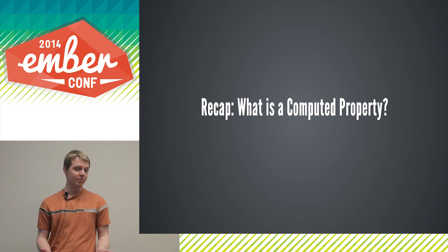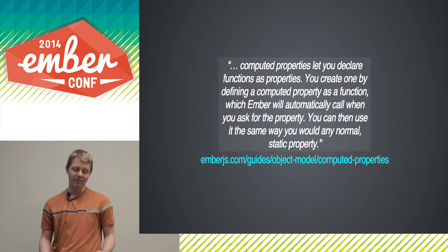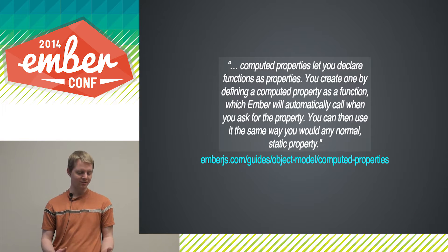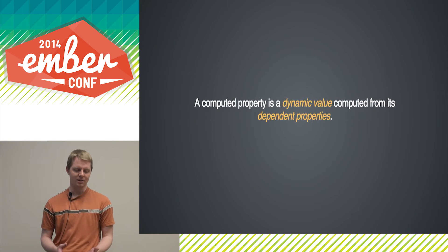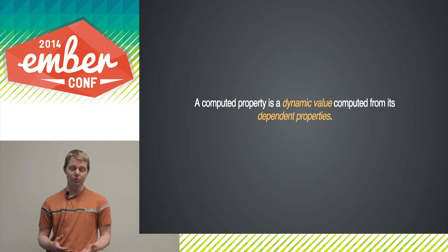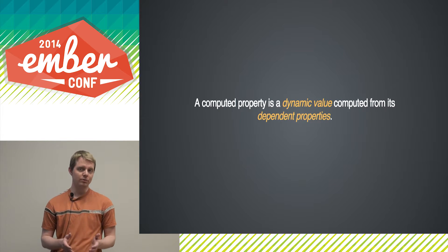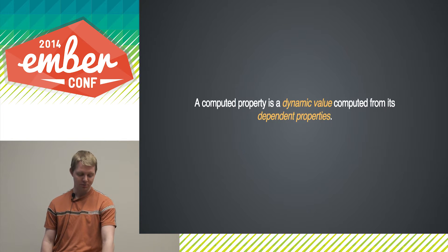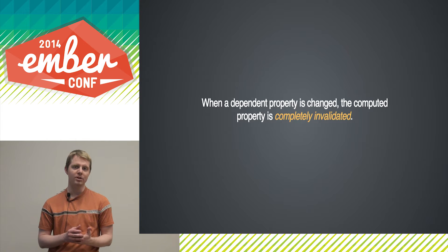Start with a quick recap. What is a computed property? I got this handy definition from the Ember.js website that defines them in terms of functions. A computed property is just a dynamic value that gets computed from some set of dependent properties. The important thing to keep in mind is that when a dependent property is changed, the computed property is completely invalidated.